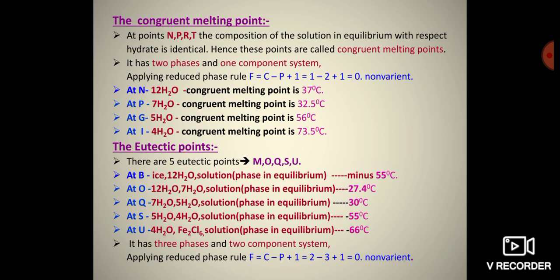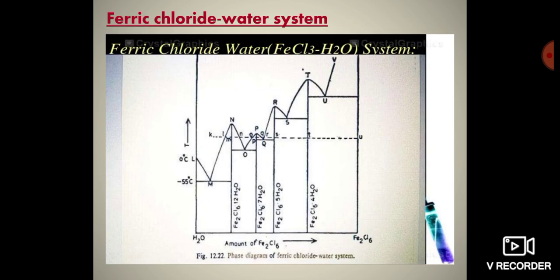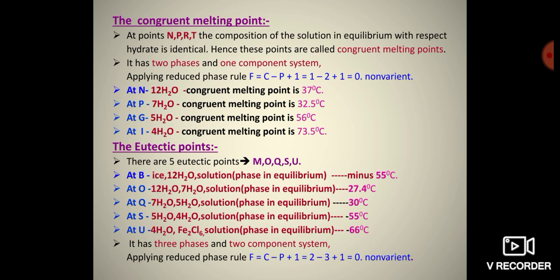The congruent melting points are at points N, P, R, and T. At these points, the composition of the solution in equilibrium with respect to the hydrate is identical. Hence, these points are called congruent melting points. They each have two phases and one component. Applying reduced phase rule: F = C − P + 1 = 1 − 2 + 1 = 0. Hence, the congruent melting points are non-variant.